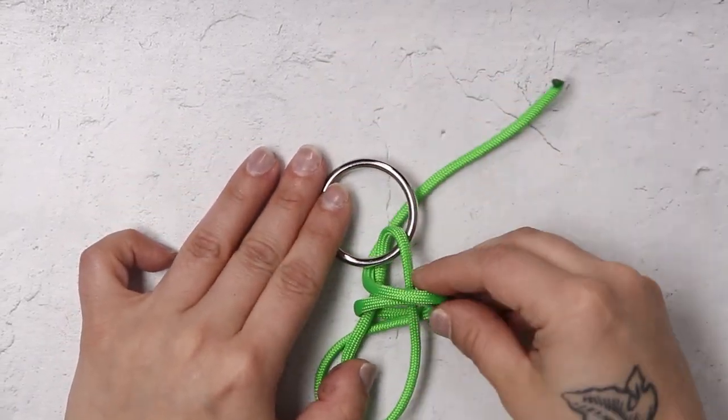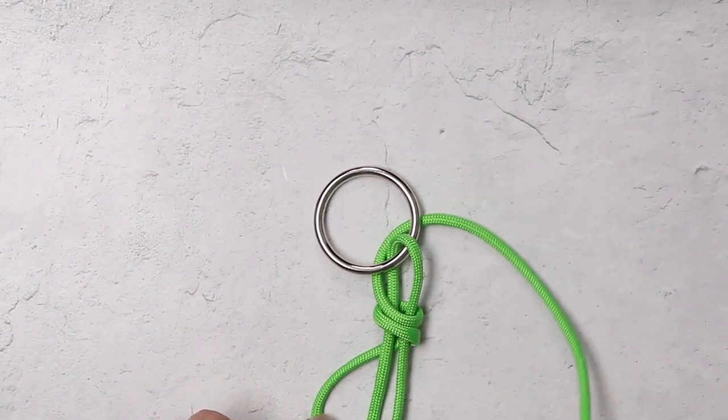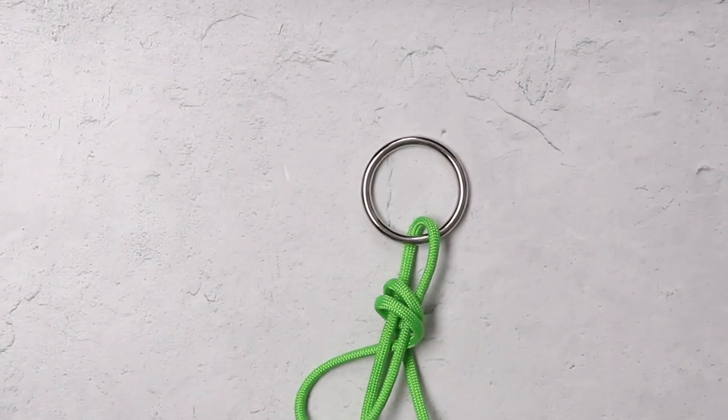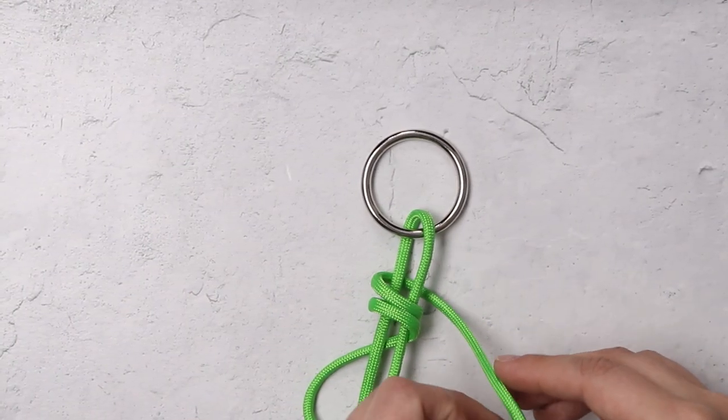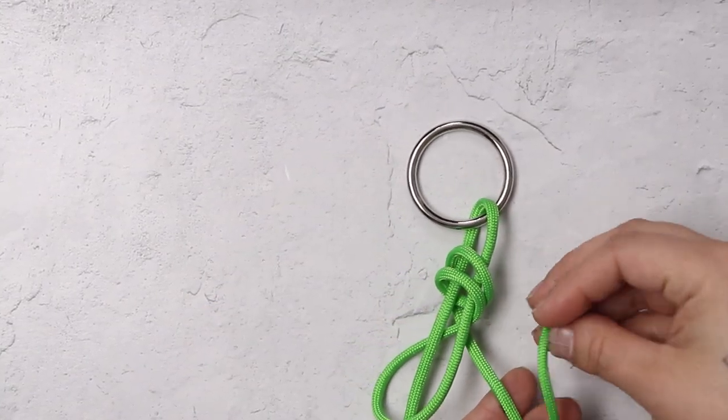Once you have wrapped that around your core strand twice, your last step is to take a bite out of that working end and just pass it back through the very first loop that you formed at the beginning of your knot.